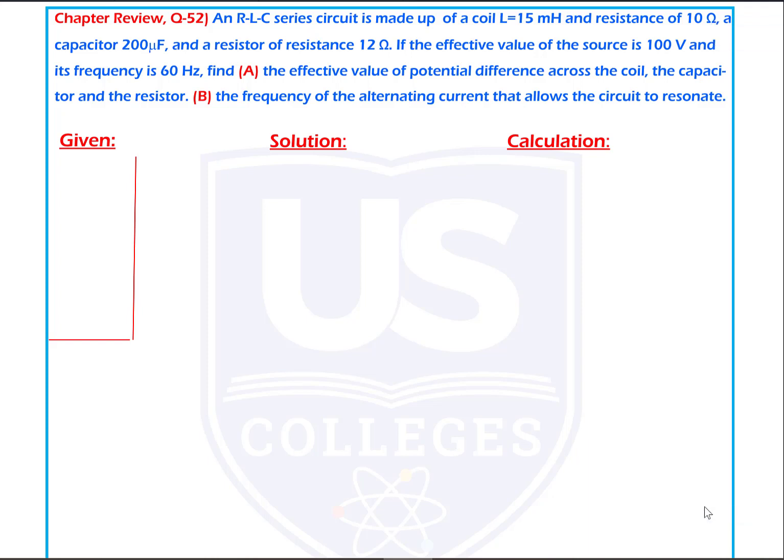Chapter 2, question number 52. An RLS series circuit is made up of a coil of 15 mH and resistance of 10 ohm.